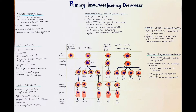The B cell immunodeficiency disorders are characterized by frequent recurring respiratory tract infections from encapsulated bacteria such as Streptococcus pneumoniae as well as Haemophilus influenzae. They can often lead to pyogenic infections — pyogenic meaning that they give rise to the formation of pus.